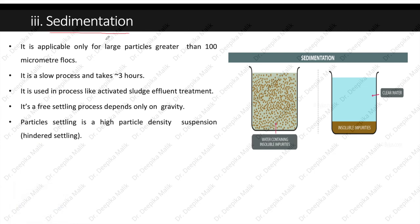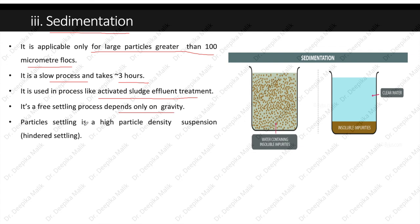Another method for solid-liquid separation is sedimentation — the simplest one. It is applicable only for large particles greater than 100 micrometers in diameter. It is a slow process, taking roughly three hours. It is used in processes like activated sludge effluent treatment and is a free-settling process that depends only on gravity for high particle density suspensions.